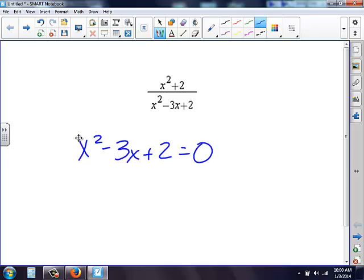And then I need to solve for this. For me to solve for this, I need to factor this down. Therefore I get an x and an x. My factors of two are two times one. My goal is to get a negative three. The only way to do that is making both of these negative.